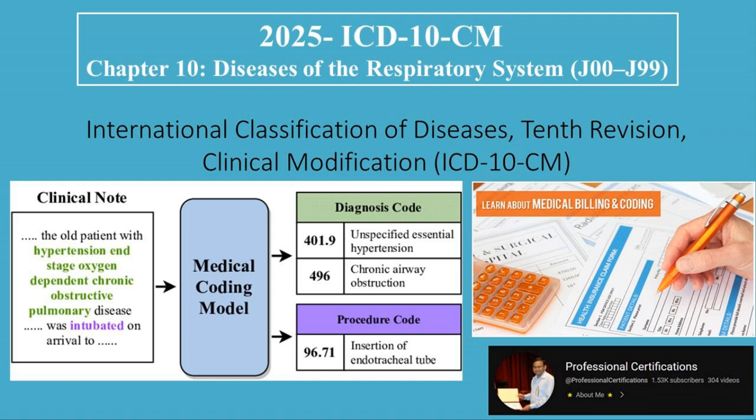Welcome to Professional Certifications Channel. In today's tutorial, we'll explore Chapter 10 of ICD-10-CM, which focuses on diseases of the respiratory system, with codes ranging from J00 to J99. This chapter includes common and critical conditions like asthma, pneumonia, COPD, and respiratory failure, making it a key chapter for coders in pulmonology, emergency medicine, pediatrics, and general practice. Let's get started.